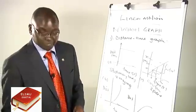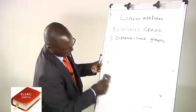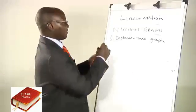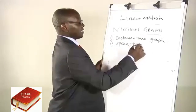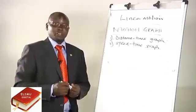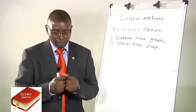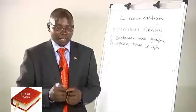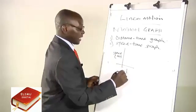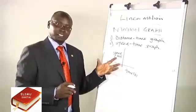Those are some of the distance-time graphs. We can now go to the speed-time graph. Just like for the distance-time graph, we sketch the speed-time graph with speed on the y-axis labeled in meters per second, and time on the x-axis labeled in seconds.